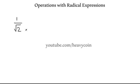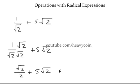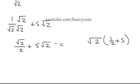Now: 1 over the square root of 2 plus 5 times the square root of 2. To get this radical out of the denominator, you multiply the bottom by the square root of 2 and the top by the square root of 2. That gives us the square root of 2 over 2, plus 5 square root of 2. Factoring out the square root of 2, we're left with one-half plus 5, which is 11 over 2. So the result is 11 times the square root of 2 over 2.